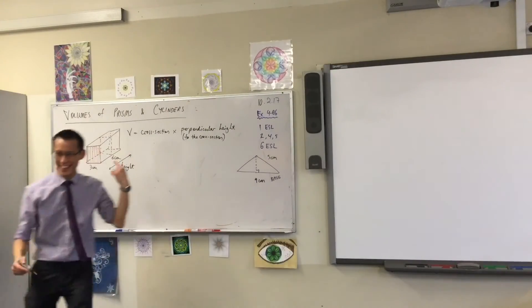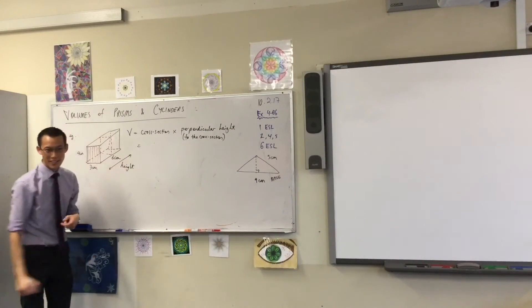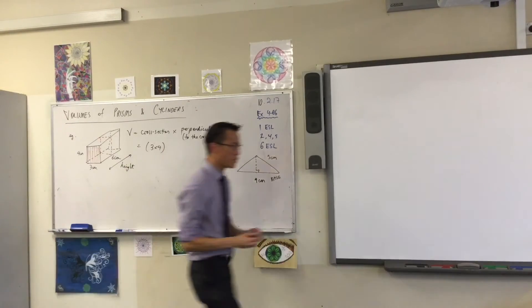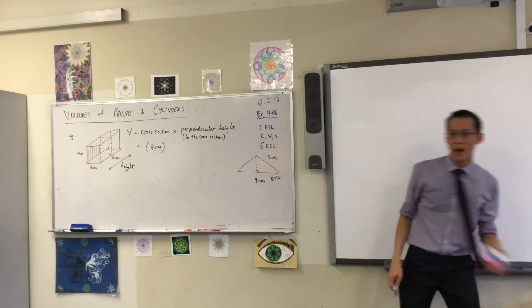So, it's literally, let's do the numbers now. In this one, what's the cross section? It's three times four.